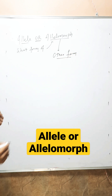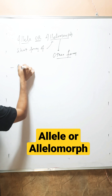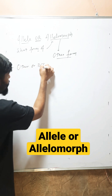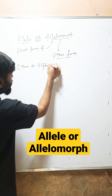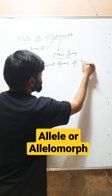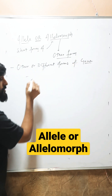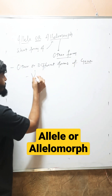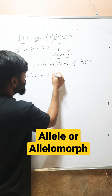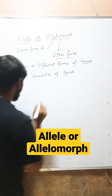What is allele? Allele is other or different forms of a gene. Or you can also say these are variants of a gene.